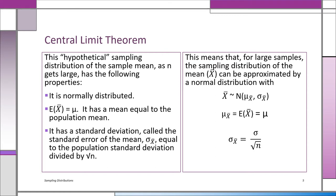So now we know: if n is relatively large — we'll use 50 probably as a cutoff — the x-bars will follow a normal distribution. The expected value of x-bar, that's the average of all the averages, equals mu.